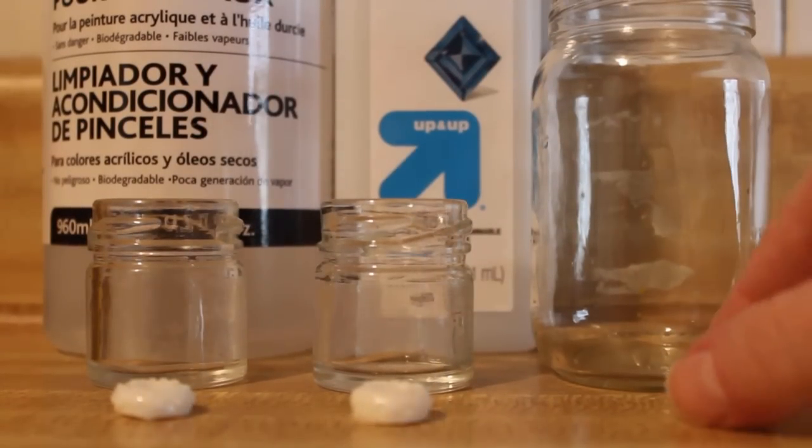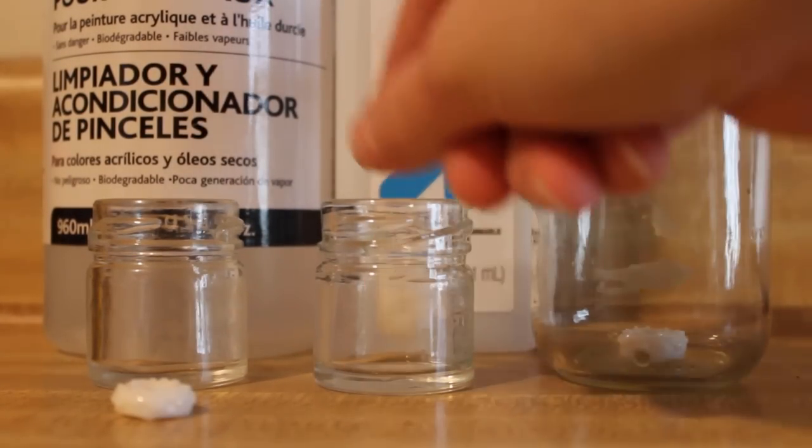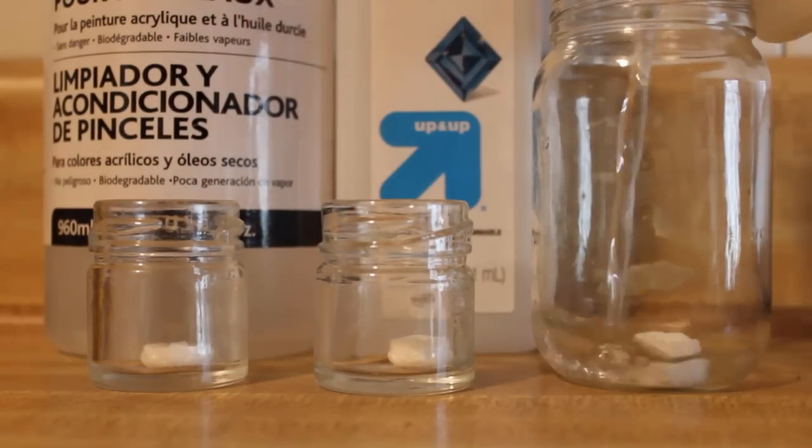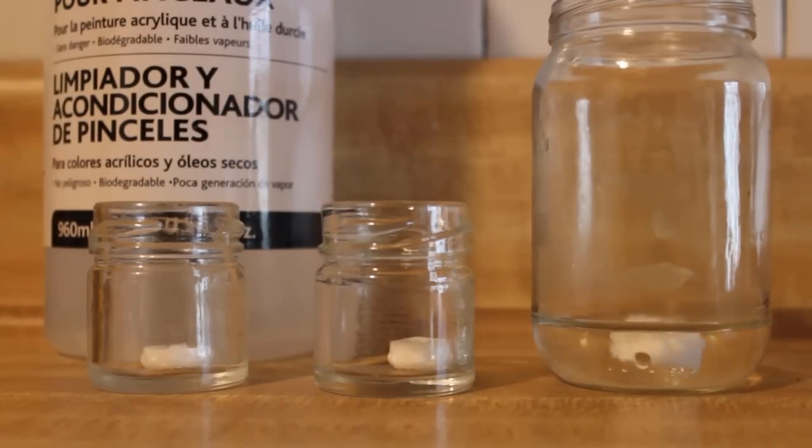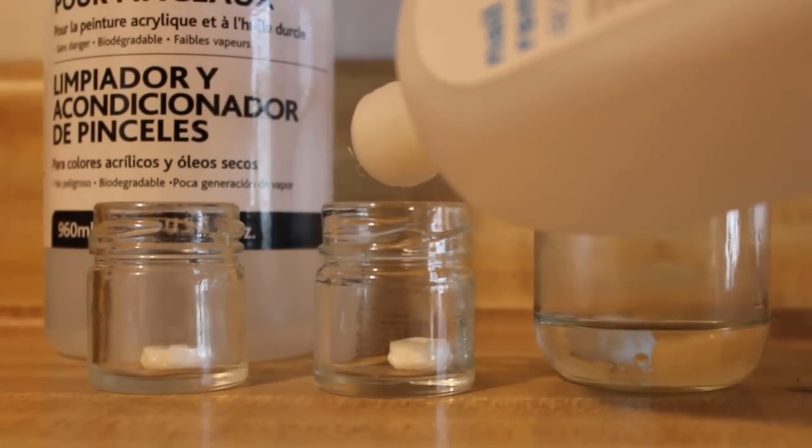So first things first, I drop a donut into each container. In one, I put water as a control substance. The middle is pure acetone, and the one on the left is Winsor & Newton brush cleaner.